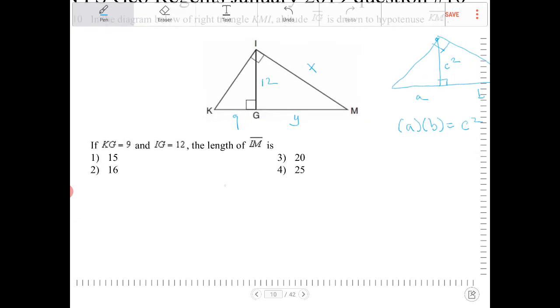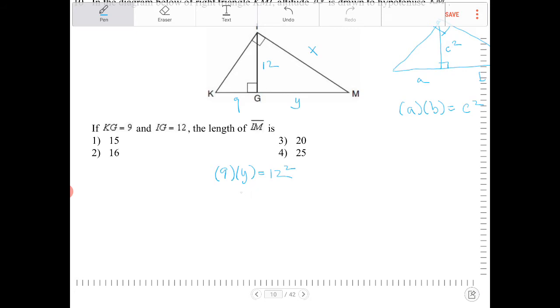So we can say 9 times Y is equal to 12 squared. And looking at this, we have Y is equal to 144 over 9. And what is that? That is equivalent to 16, right? I don't know why that took so long. So anyway, Y is equal to 16.